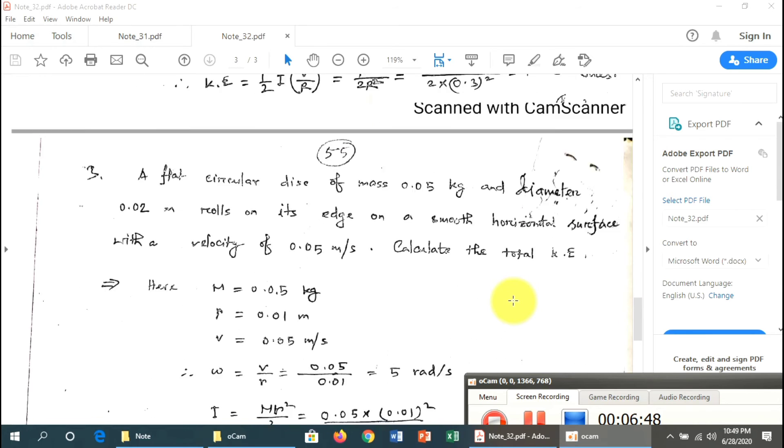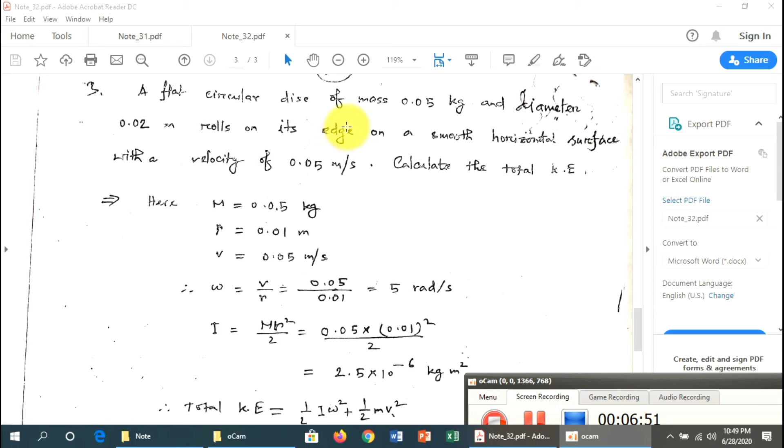Problem 4: A flat circular disc of mass 0.05 kg and diameter 0.02 meter rolls on its edge on a smooth horizontal surface with velocity of 0.05 m/s. Calculate the total kinetic energy. The total kinetic energy includes both translational and rotational kinetic energy.